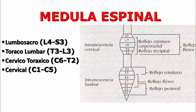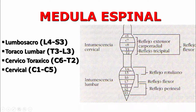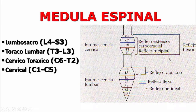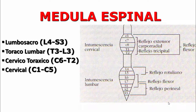De la misma manera, para el miembro pélvico voy a tener todas las salidas de los reflejos miotácticos del lumbar 4 al sacro 3. La intumescencia cervical contiene todos los reflejos miotácticos del miembro torácico, y la intumescencia lumbar todos los del miembro pélvico. Con solo cinco reflejos miotácticos vamos a poder mapear en qué parte de toda la médula espinal se encuentra la lesión.